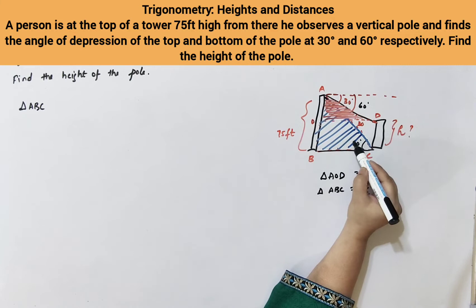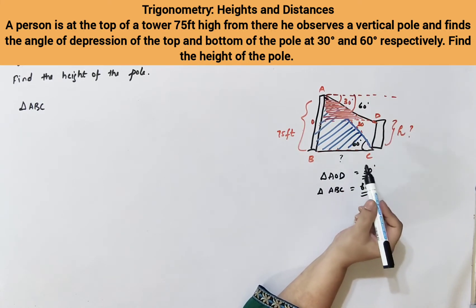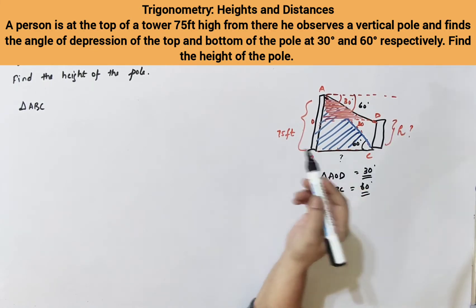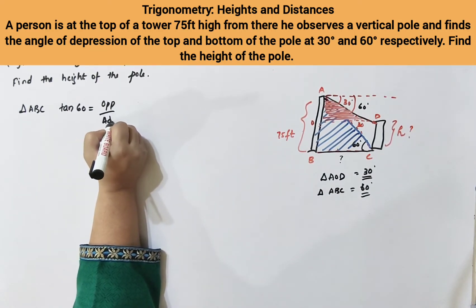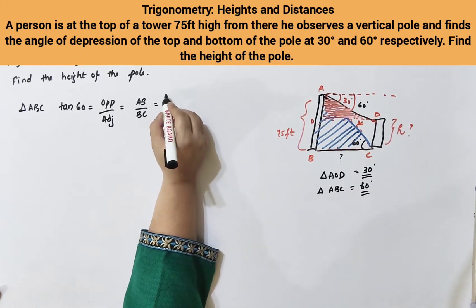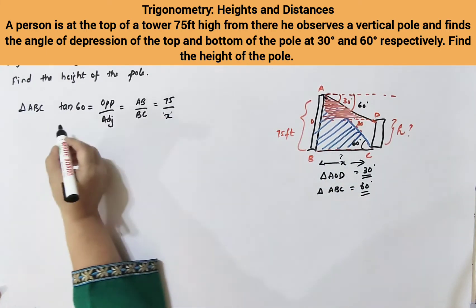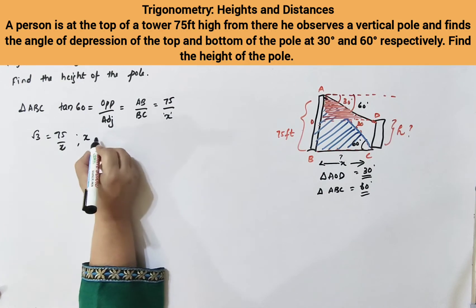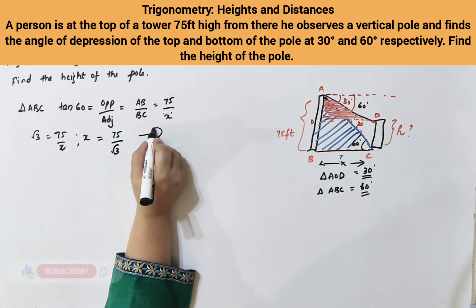In triangle ABC, we have a 60 degree angle. The opposite side AB is given as 75 feet, and we don't know the adjacent side BC. Since the opposite side is given and we need to find the adjacent side, we'll use the tan theta formula. Tan 60 equals opposite over adjacent, which is AB over BC. AB is 75 feet and BC we'll call X. Tan 60 is root 3, so root 3 equals 75 divided by X. Therefore X equals 75 by root 3. Let's call this Equation 1.